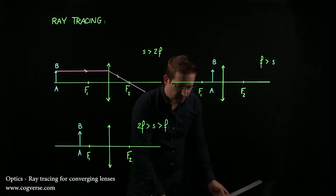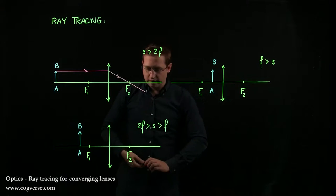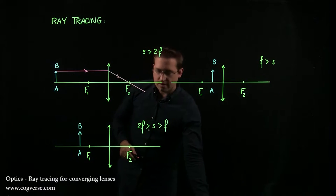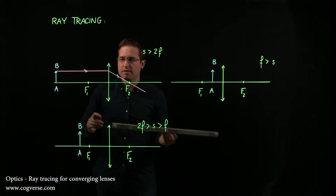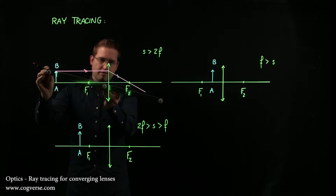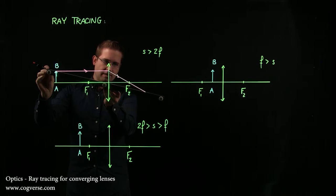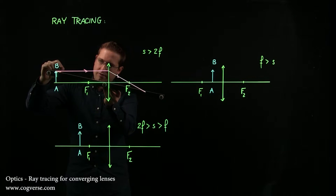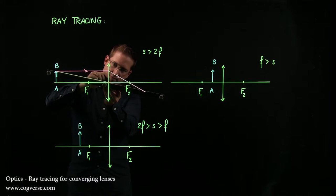The second rule, which might be in fact the simplest rule, is that any ray coming from B and going through the center of the lens is not deflected. So we could draw this ray of light like this.